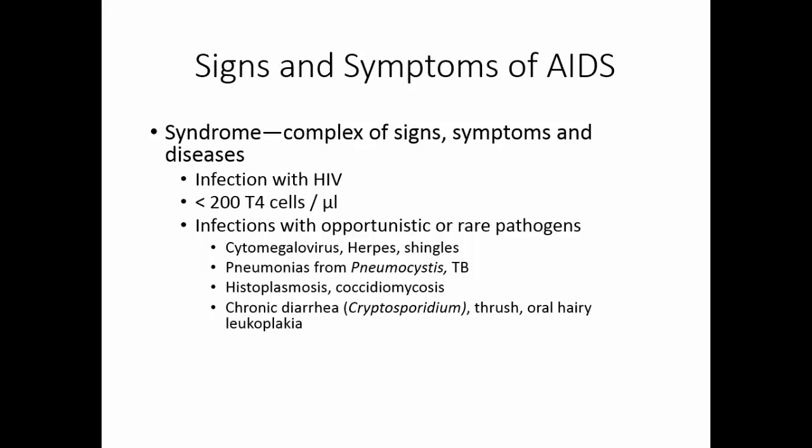Other opportunistic infections include thrush and oral hairy leukoplakia, where the taste buds actually grow black hairy material — it's not really damaging, but it looks very strange. Kaposi's sarcoma is a very rare cancer seen pretty exclusively in individuals with AIDS. Toxoplasmosis and meningitis with the yeast Cryptococcus are also seen. These are all very common organisms, but most people do not show any illness from them because the normal immune system fights them off.